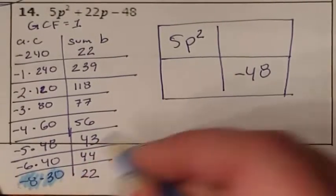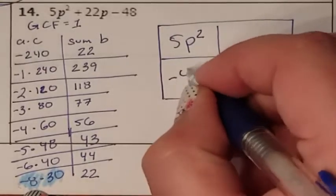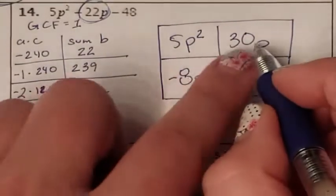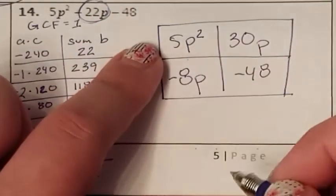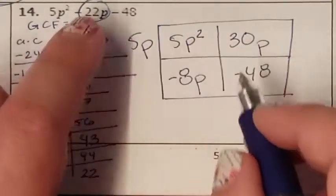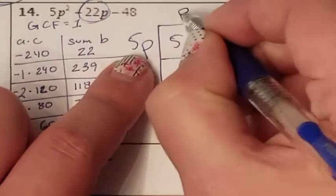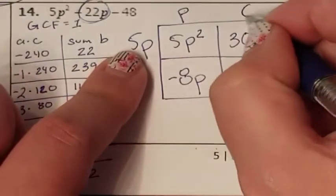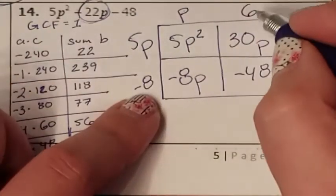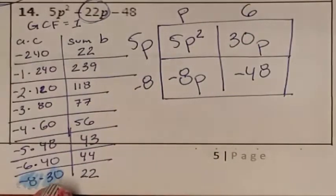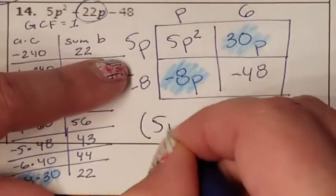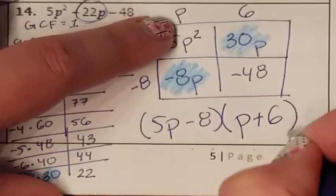I found the two numbers I need: negative 8 and positive 30. These split the P term, so they need P's next to them. Now find one GCF: 5 and 30 can both be divided by 5, and P squared and P can both be divided by P, so the GCF between these two is 5P. Then I just multiply: 5P times P gives 5P squared; 5P times 6 gives 30P; P times negative 8 gives negative 8P; and negative 8 times 6 gives negative 48. All the multiplication works out. My answers are the sides: parenthesis 1 is 5P minus 8, parenthesis 2 is P plus 6.